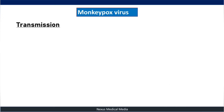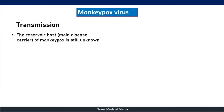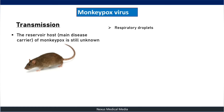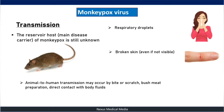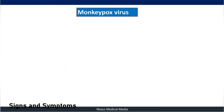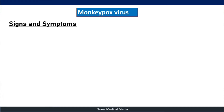Regarding transmission: the exact reservoir remains unknown, but African rodents have been implicated. The virus is transmitted through respiratory droplets such as coughing and sneezing, through broken skin even when the break is not visible, and from animal to human via bites, scratches, or bushmeat preparation. It can also spread through direct contact with bodily fluids or indirect contact, such as touching the bedding of a sick animal.